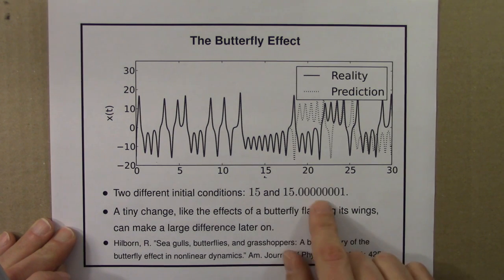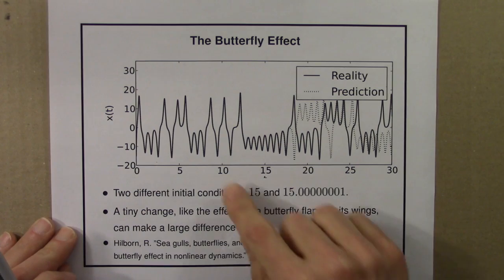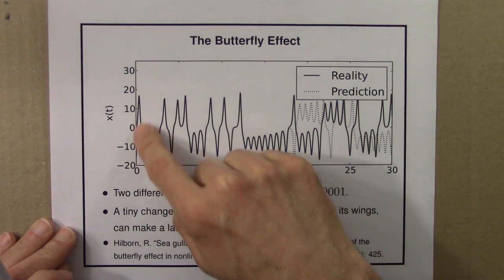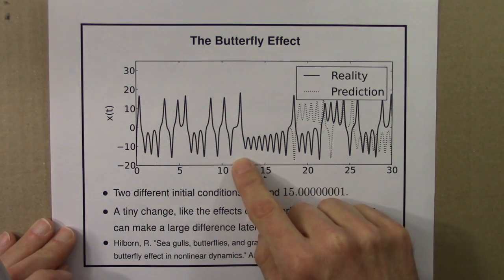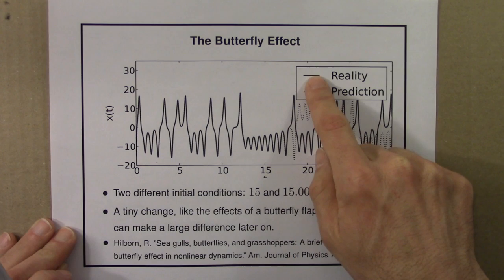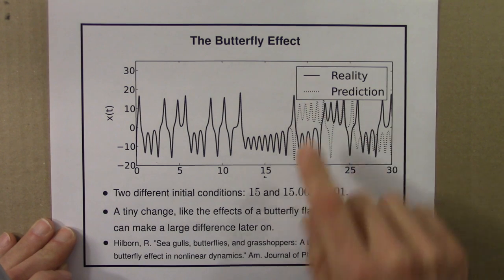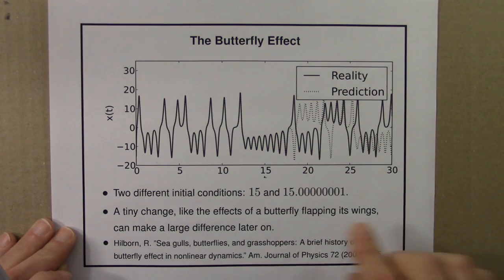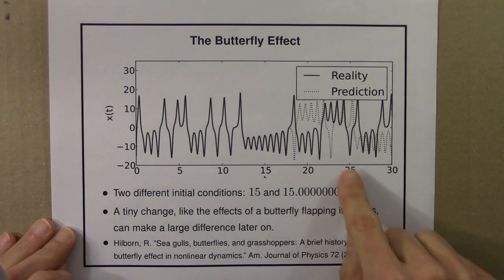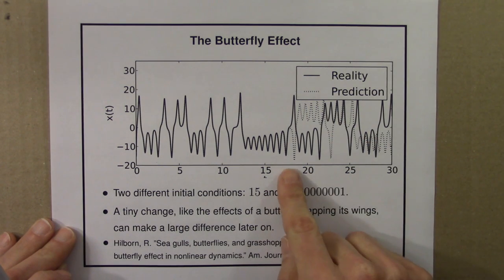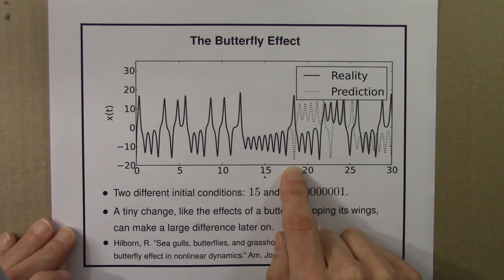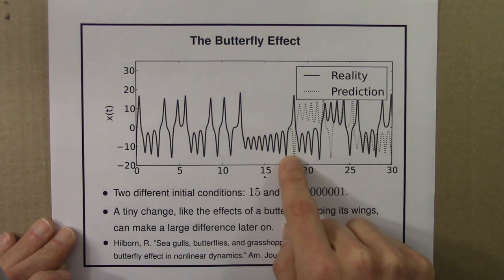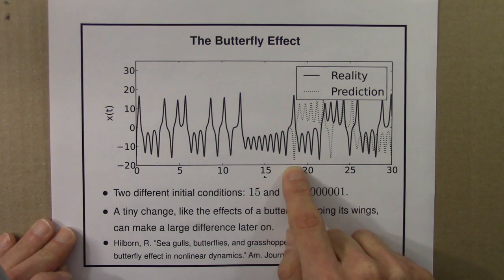Imperceptible, meaninglessly different. And here is the trajectory, the orbit, of the two solutions. One we could think of as reality, one as prediction. And here after about 18 minutes or 18 time steps, the two curves go apart.